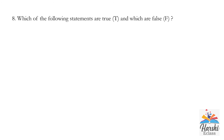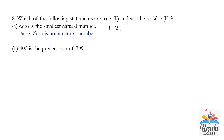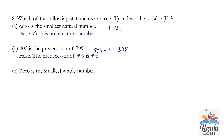Eighth question: which statements are true and which are false? A: 0 is the smallest natural number — False, because natural numbers start from 1; there is no 0 in natural numbers. B: 400 is the predecessor of 399 — False; the predecessor of 399 is 398. C: 0 is the smallest whole number — True, because whole numbers start from 0.